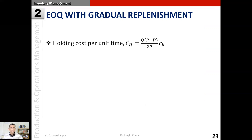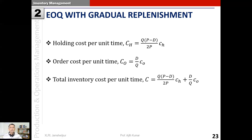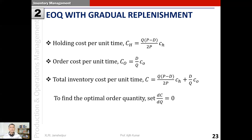From this we can compute the holding cost: CH equals q(p minus d) divided by 2p, multiplied by the unit holding cost ch. The order cost is the same as in the basic EOQ model - it depends on the number of orders per unit time multiplied by cost per order, which is (d/q) times co. The total inventory cost per unit time therefore becomes C = q(p minus d)/(2p) × ch + (d/q) × co.